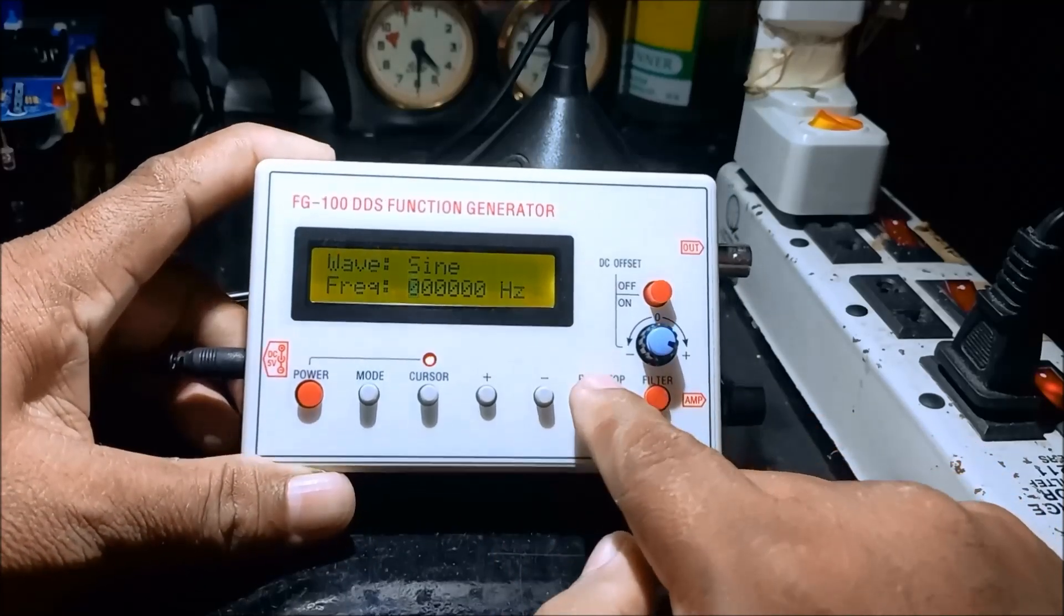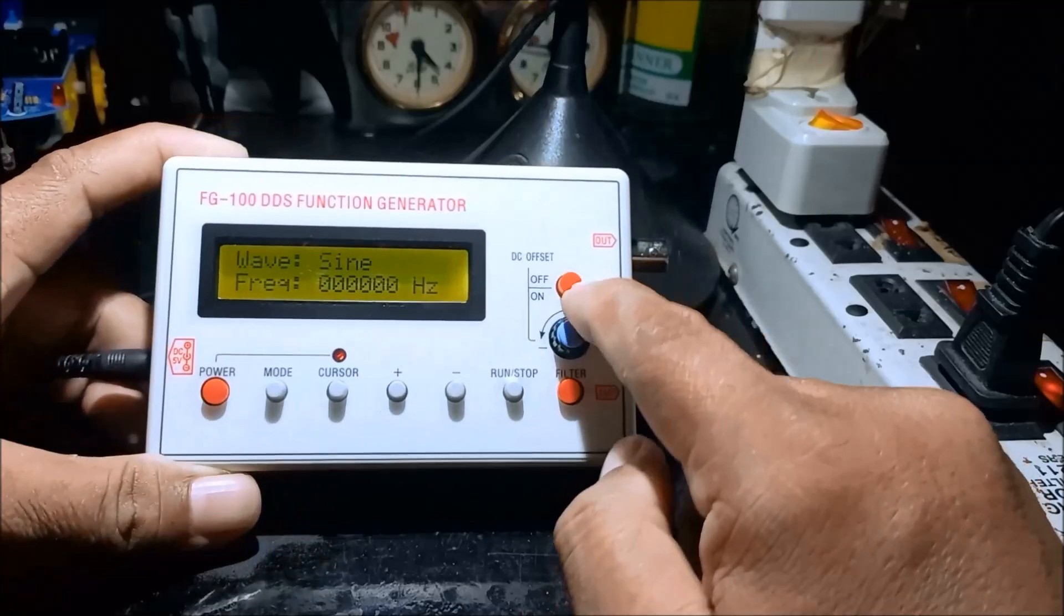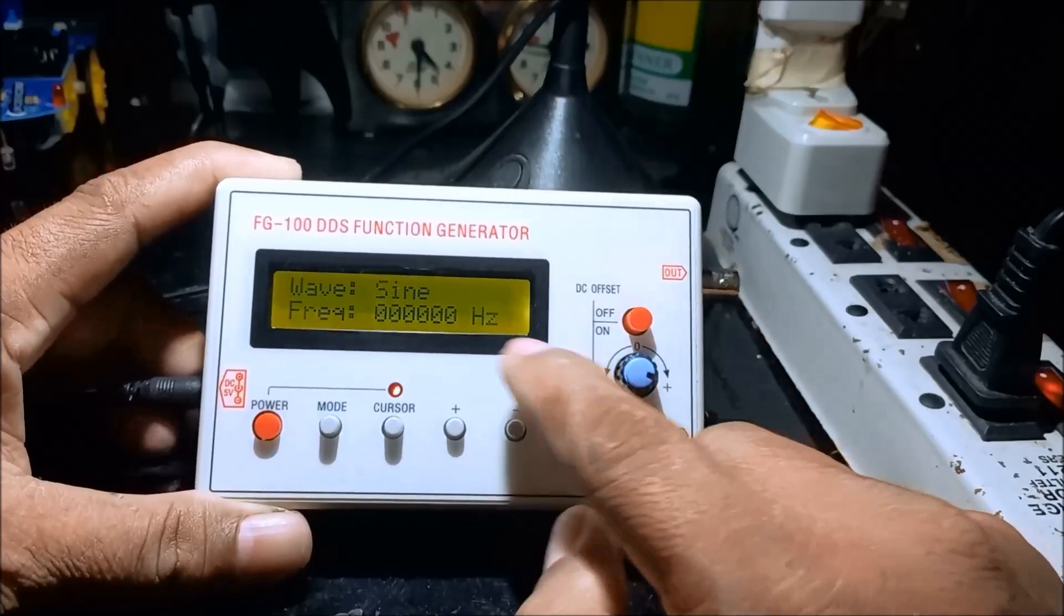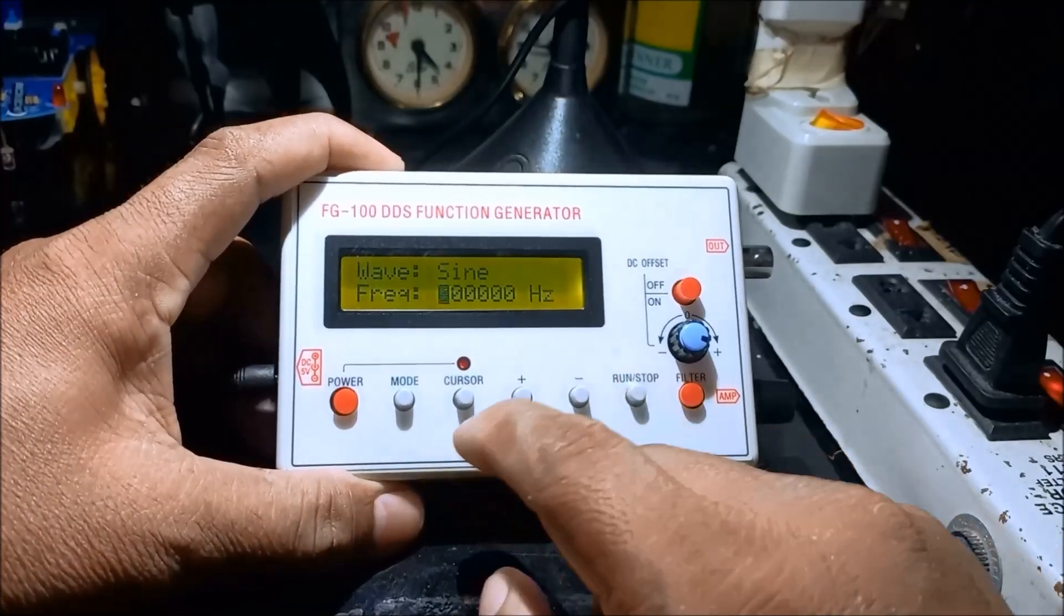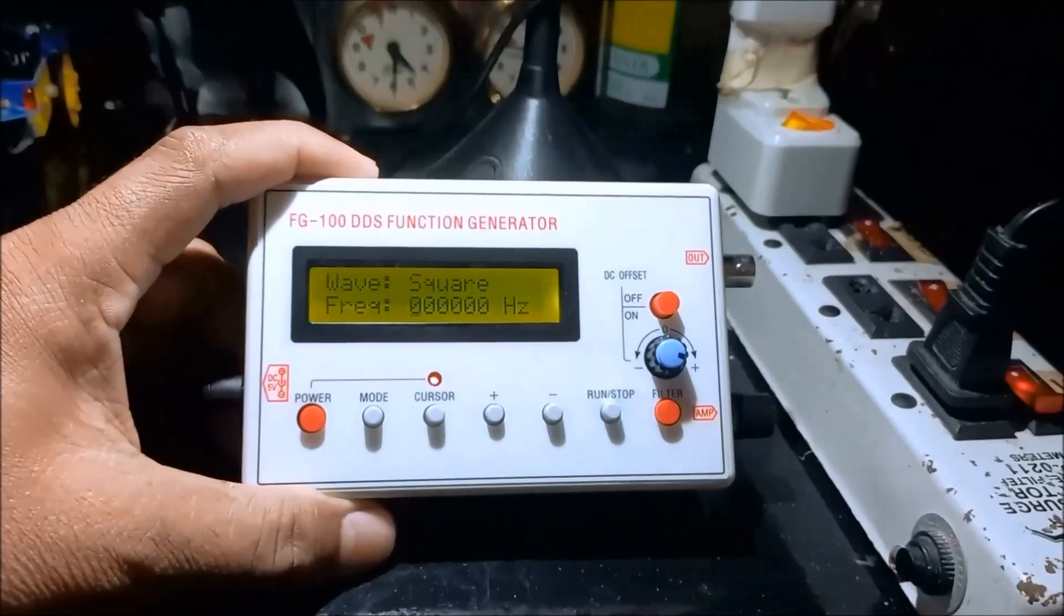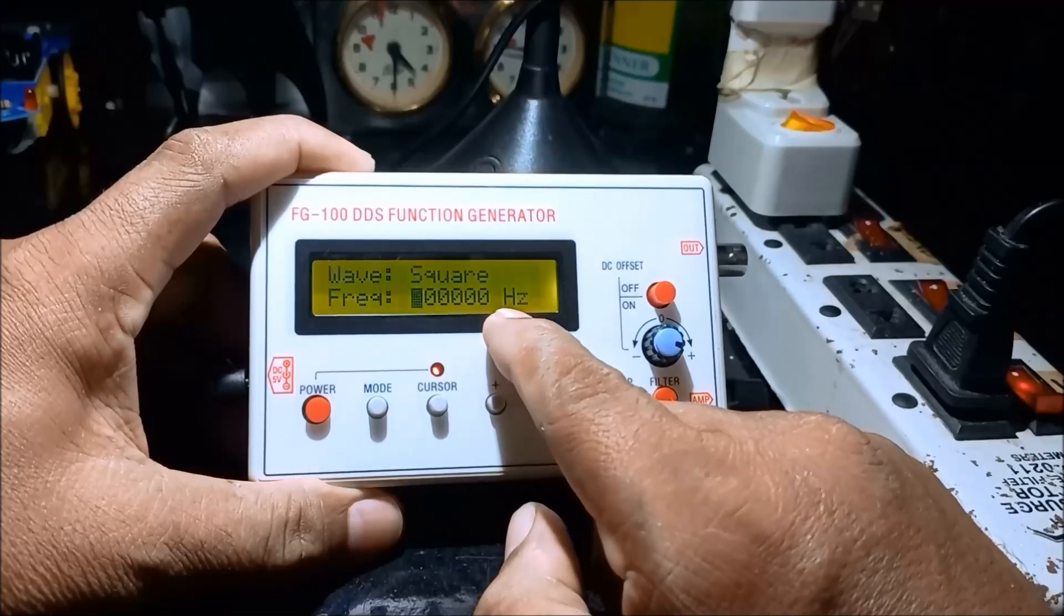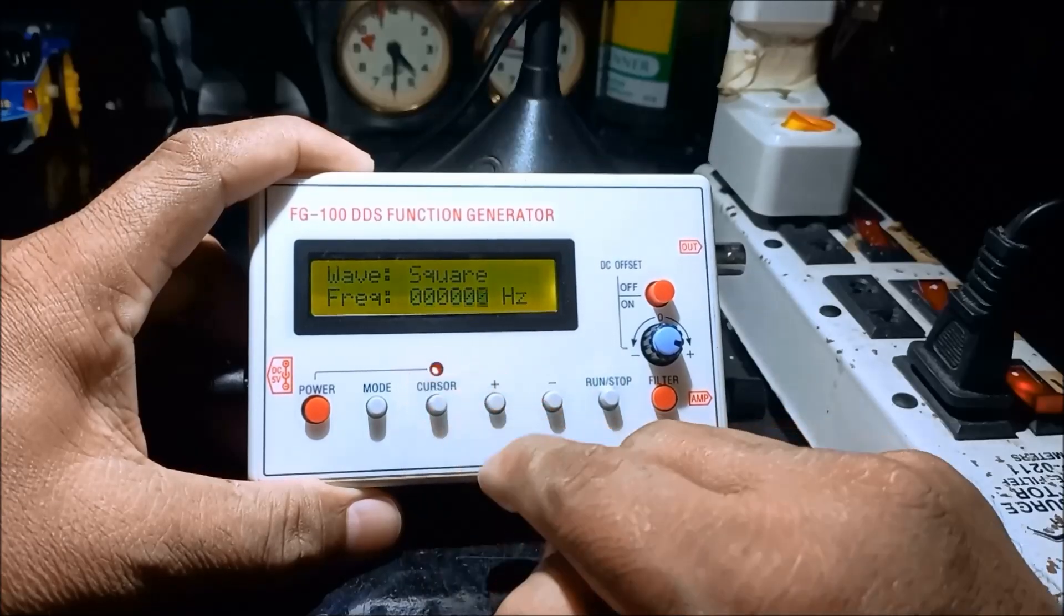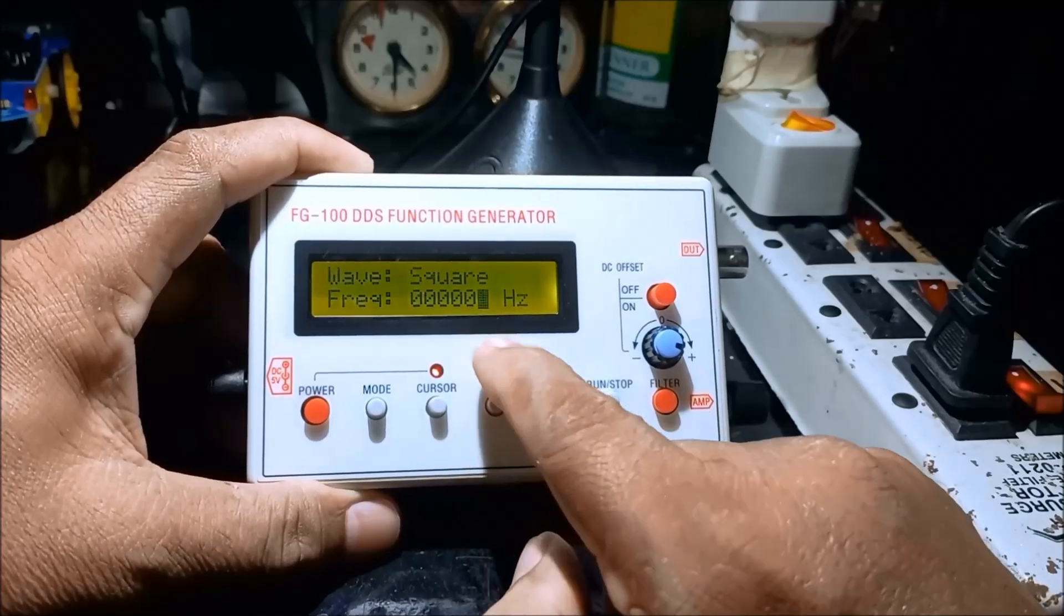And for the run stop, that is for running what frequency we are going to run. And then for the offset, DC offset, is also for the waveform. Let us first see the square wave. And we are going to set the square wave. Position of the cursor, 1 hertz. If we press the plus button, becomes 1 hertz.